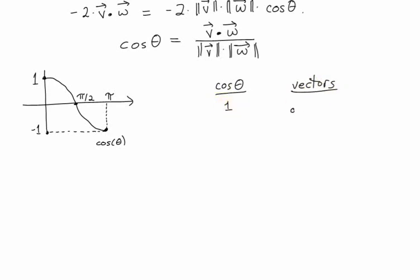For instance, if cosine theta is equal to 1, that means theta is equal to 0, the angle between the vectors is 0, they're pointing in the same direction.